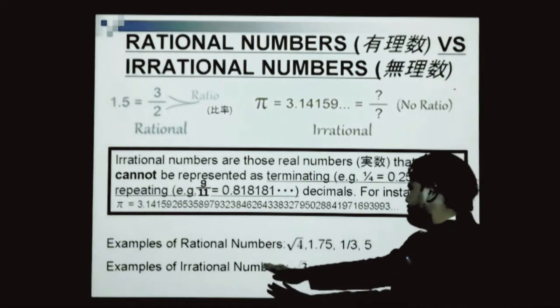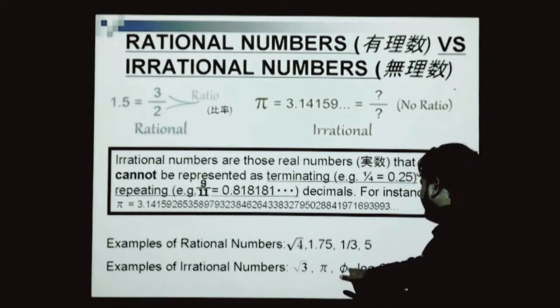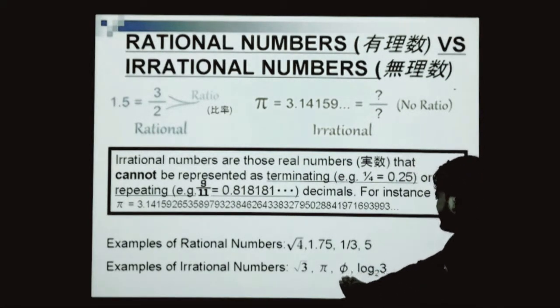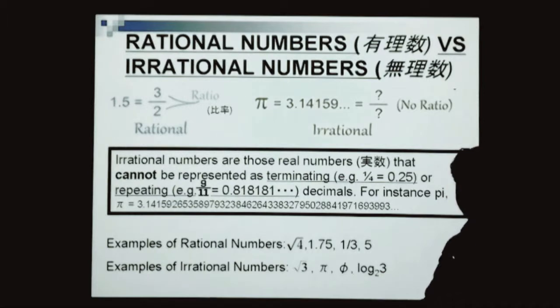Examples of irrational numbers: the square root of 3, pi (one of the most popular examples), phi (the golden ratio in mathematics), and some logarithmic numbers.